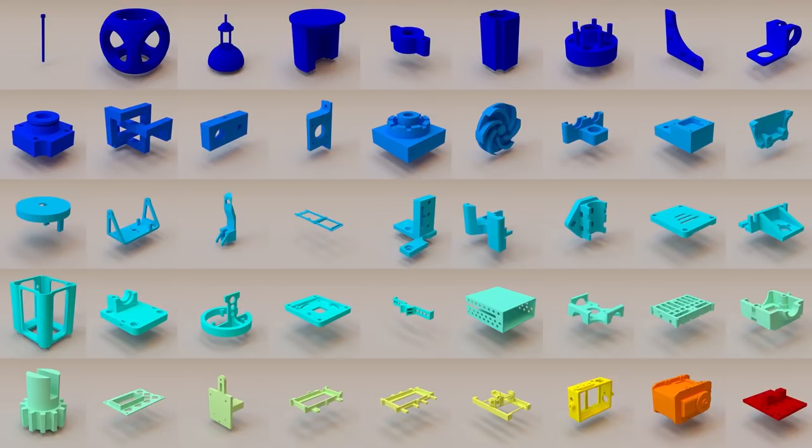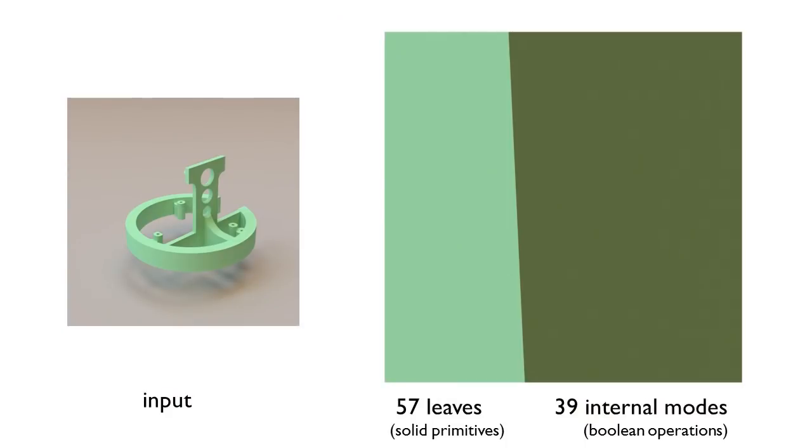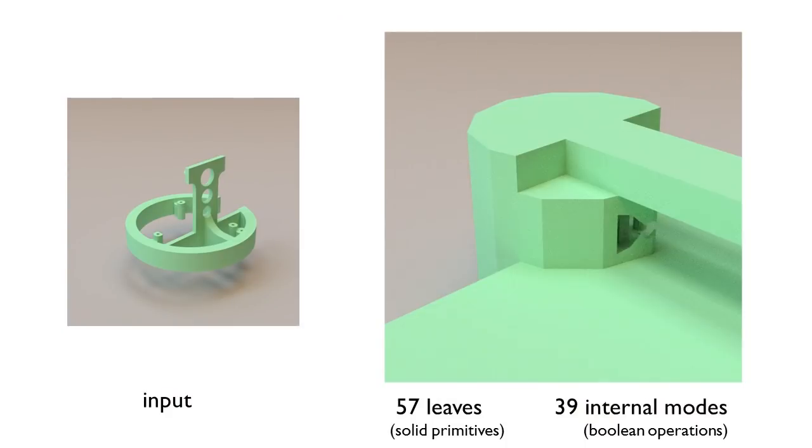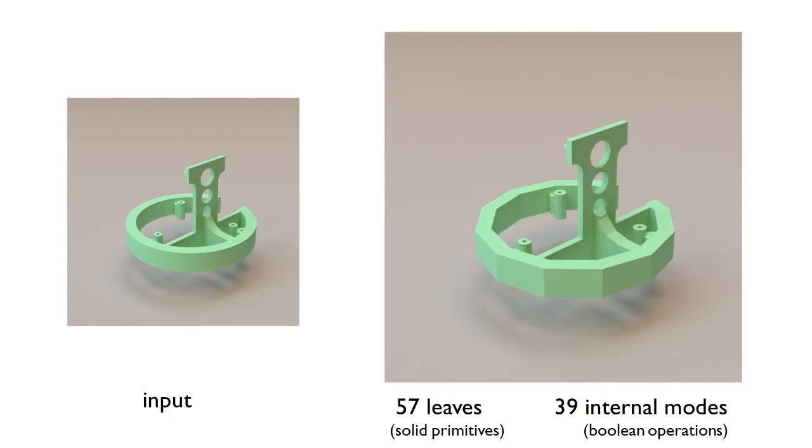Our scalable method can solve all examples and generates compact CSG trees. For example, this mechanical part composed of 57 solid primitives was inferred in less than 17 minutes.